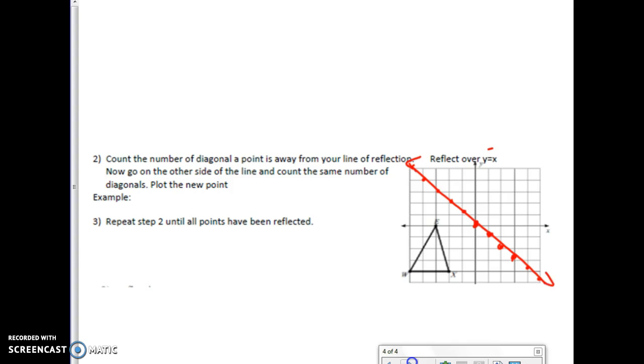And what I'm going to do is, to reflect it, I'm going to count the number of diagonal squares I am away from my line of reflection. So, if I'm looking at point E, I am 1 and a half away. So I'm going to go half and 1 to get E.